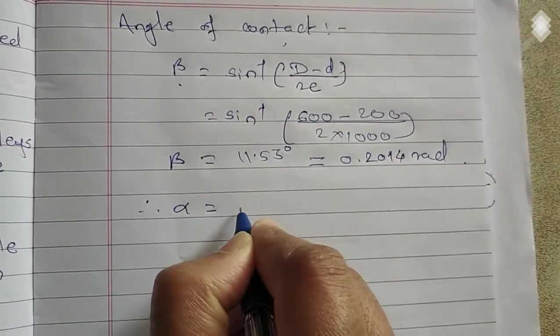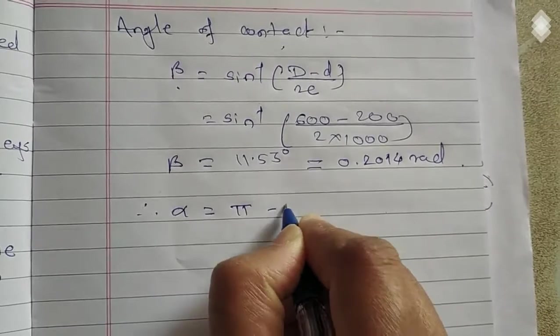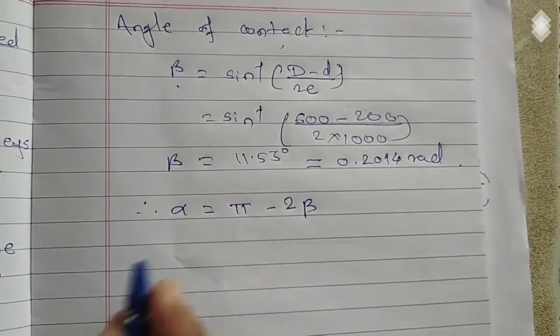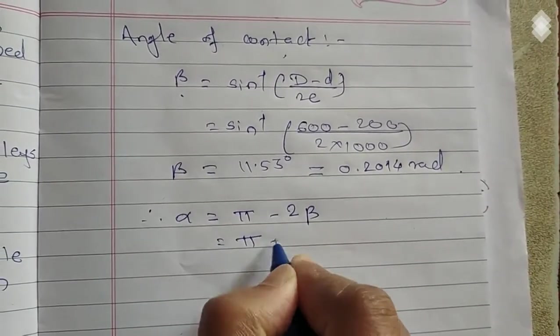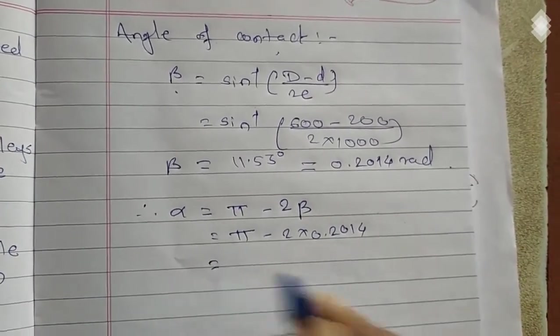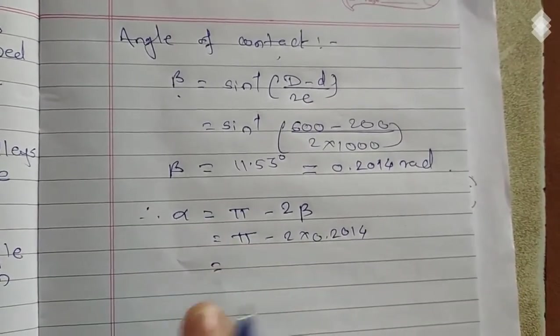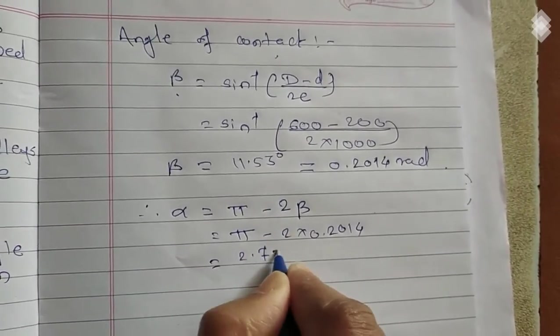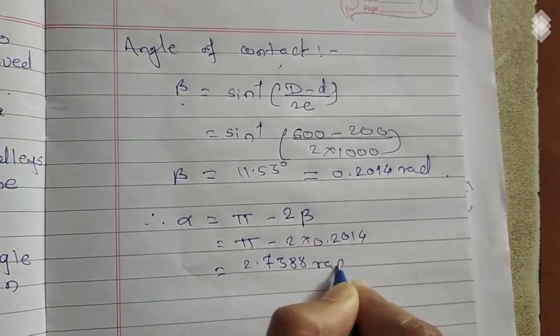Therefore angle of contact is equal to pi minus 2 beta. So it is equal to pi minus 2 into 0.2014. So angle of contact or angle of wrap is equal to 2.7388 radians.